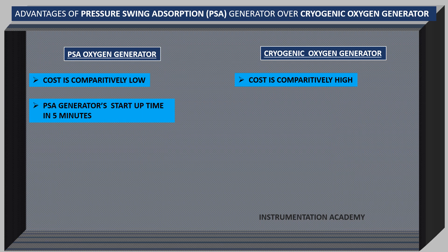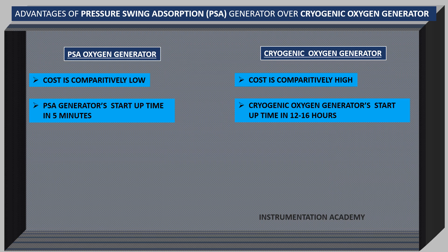Therefore, depending on the oxygen demand, generator can be switched on and off very conveniently. While cryogenic oxygen plant startup time is around 12 to 16 hours. So cryogenic oxygen plant cannot be switched on and off very frequently.